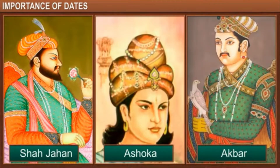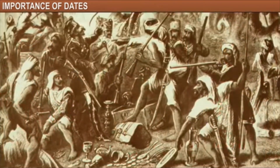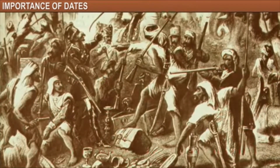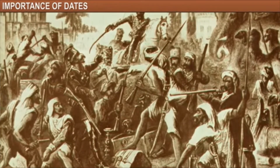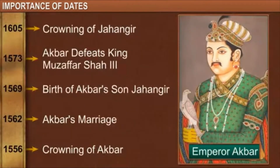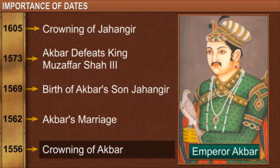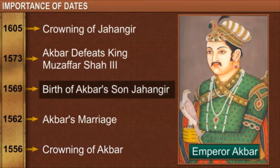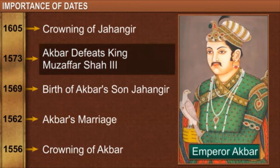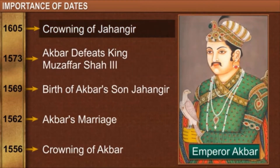India was ruled by kings who fought battles and whose actions altered the life of the common people. Thus, dates began to be associated with important events like the crowning of a king, his marriage, the birth of his first child, the battles he fought, his death, and the crowning of the next king.